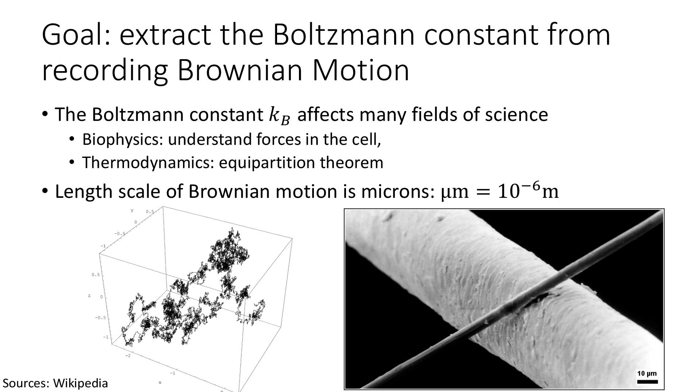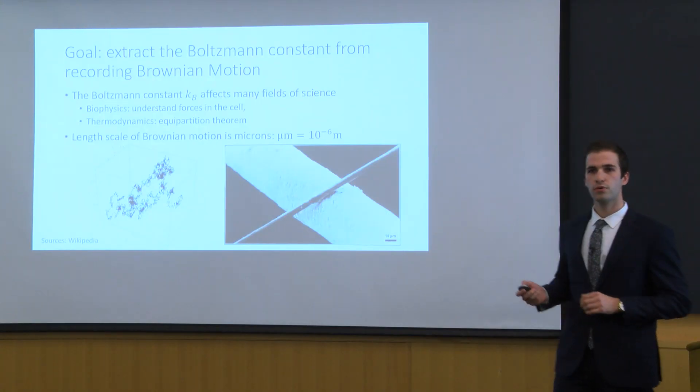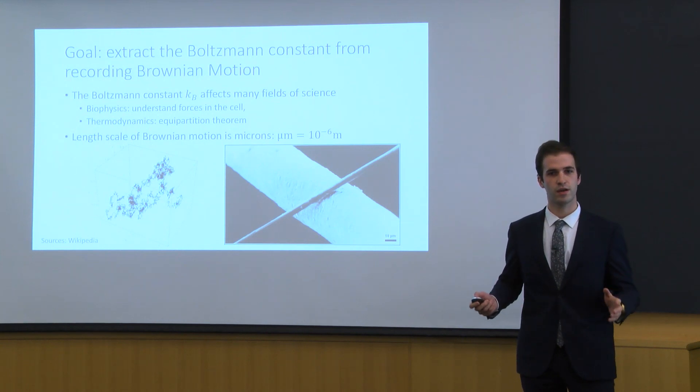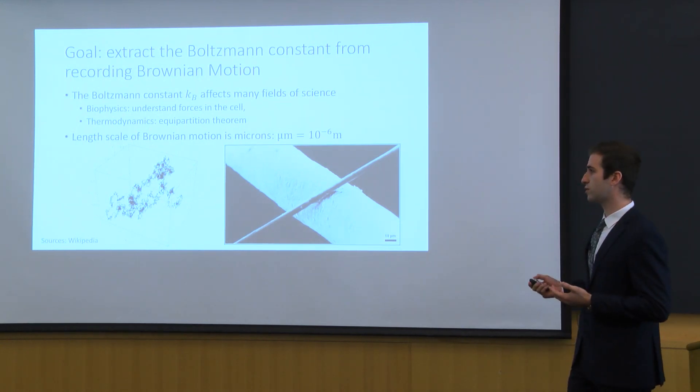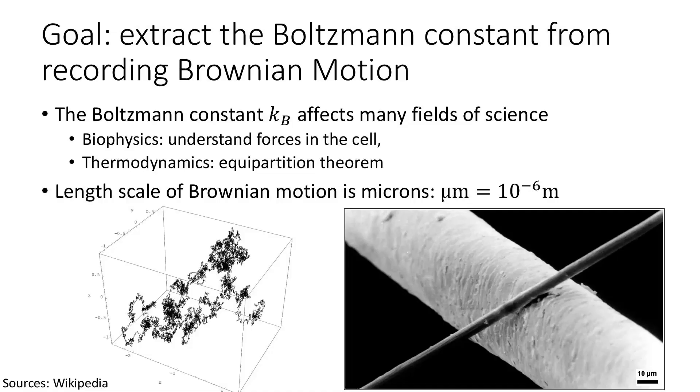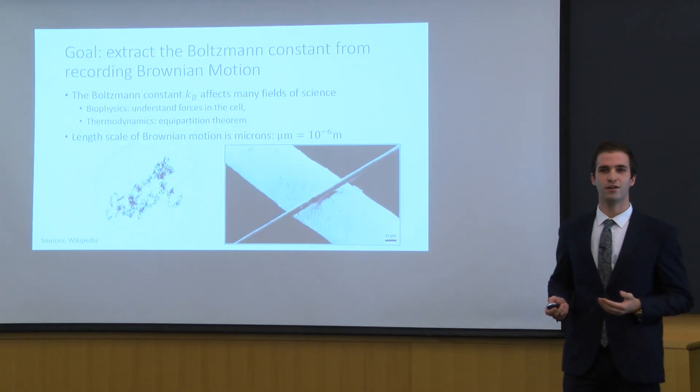How does this relate to the Brownian motion? The key thing is to think about length scales. Brownian motion is relevant in terms of microns and at the same time if we look at the cellular level, for example if we look at our hair, we have micron-sized hair.